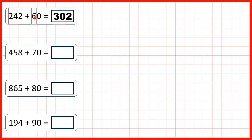24 plus 6 is 30, and the two ones stays the same. Now 458 plus 70. Highlighting our tens digit, 5 plus 7 will give us 12, but that's a two-digit number.